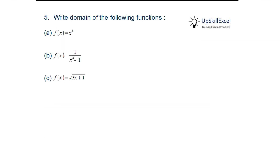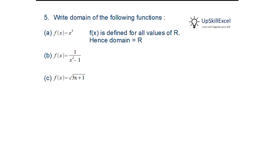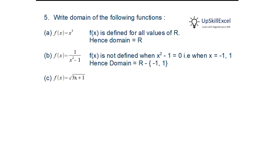Write the domain of the following functions. For f(x) = x³, for all values of x we get f(x), so the domain is ℝ. For f(x) = 1/(x²−1), at x = ±1, x²−1 becomes 0 and f(x) is not defined. Hence the domain is ℝ − {1, −1}.